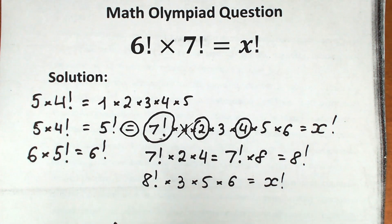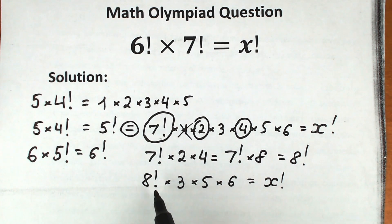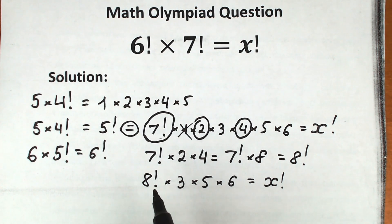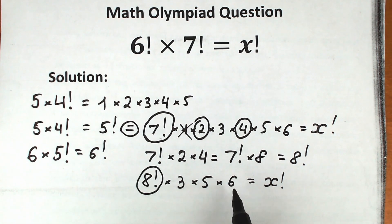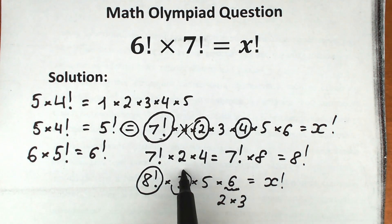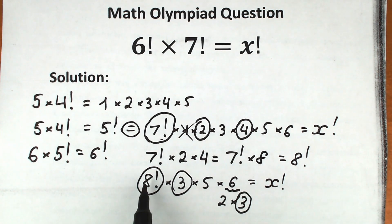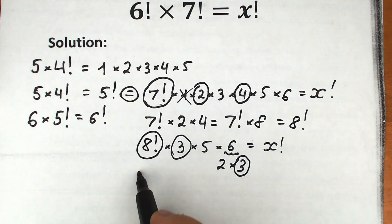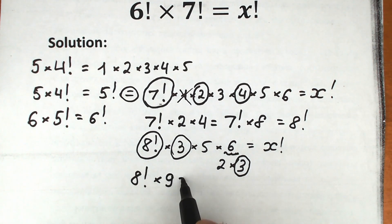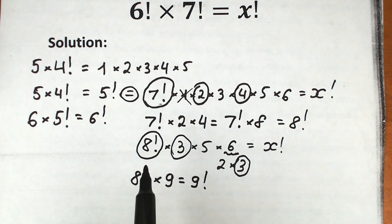Using the same logic, we have 8 factorial and we want 9 factorial — so we need to find a 9. We don't have 9 directly, but if we write 6 as 2 times 3, we can take a 3 from here and a 3 from the remaining 3. So 8 factorial times 3 times 3 gives us 8 factorial times 9, which equals 9 factorial. We replace those values with 9 factorial.